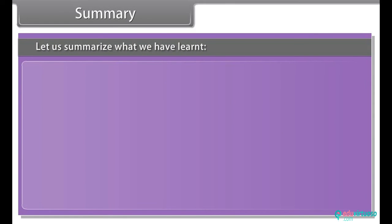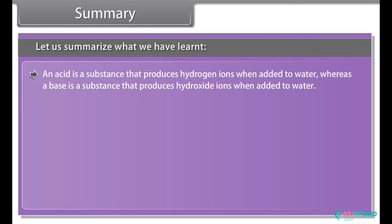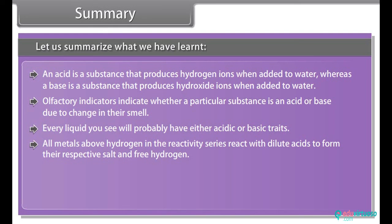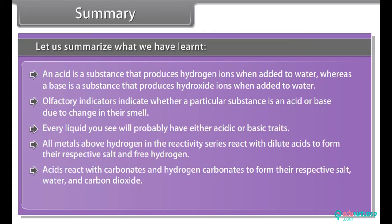Summary. Let us summarize what we have learnt. An acid is a substance that produces hydrogen ions when added to water, whereas a base is a substance that produces hydroxide ions when added to water. Olfactory indicators indicate whether a particular substance is an acid or base due to change in their smell. Every liquid you see will probably have either acidic or basic traits. All metals above hydrogen in the reactivity series react with dilute acids to form their respective salt and free hydrogen. Acids react with carbonates and hydrogen carbonates to form their respective salt, water and carbon dioxide.